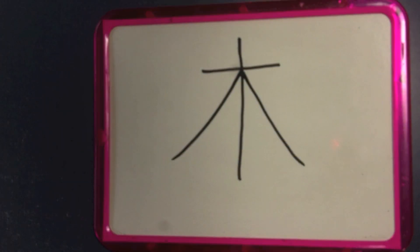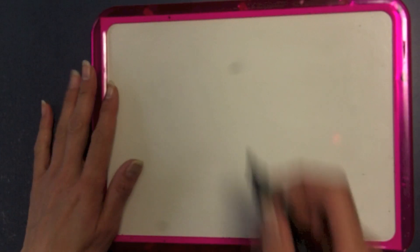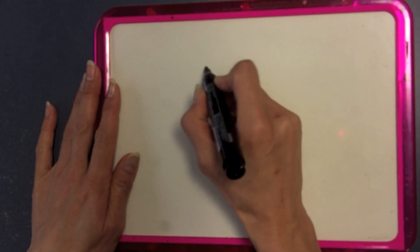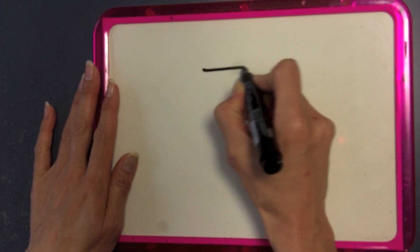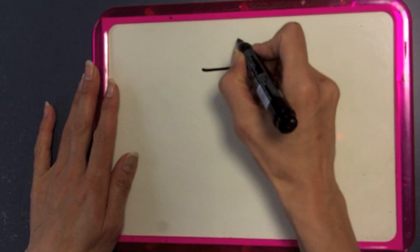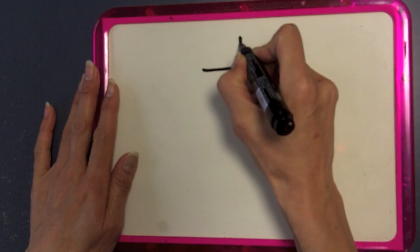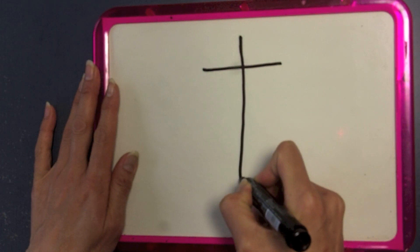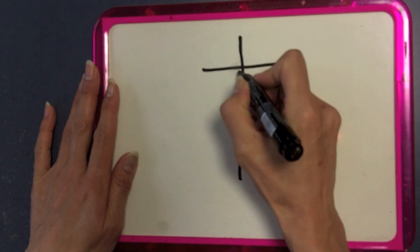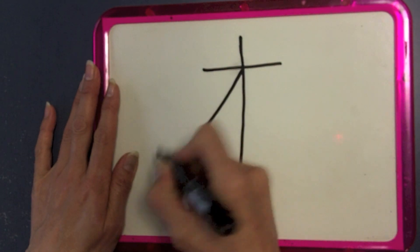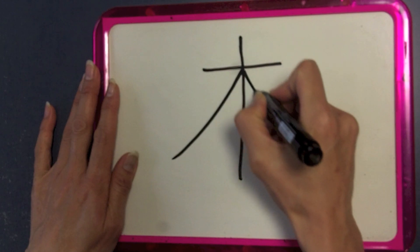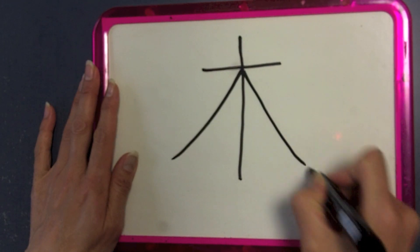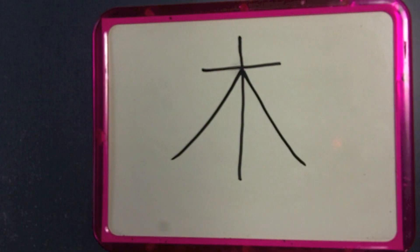It's a four-stroke kanji, so let's do it again, this time counting. We start horizontally — one, then vertically — two, and then from the left — three, and then the right — four. Pretty simple kanji.